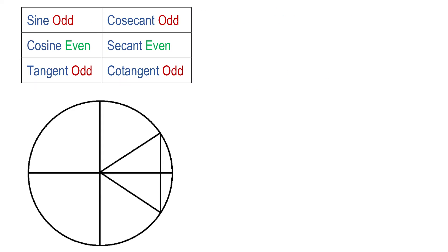Out of all six trigonometric functions, cosine and secant are even, but sine, cosecant, tangent, and cotangent are odd. Let's use this unit circle to see why cosine and secant are even and the rest of the functions are odd.